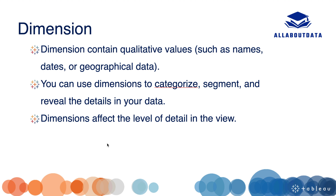Level of detail means we can select on which level we want to see the data. For example, suppose we have category and subcategory in our data source but we want to see the data only based on subcategory — we can drag the subcategory and see the data based on that.